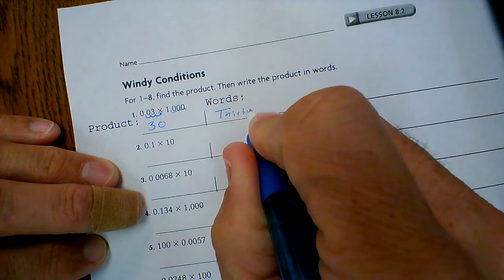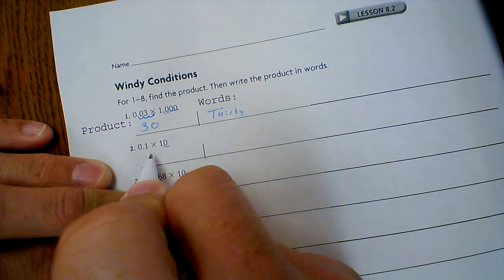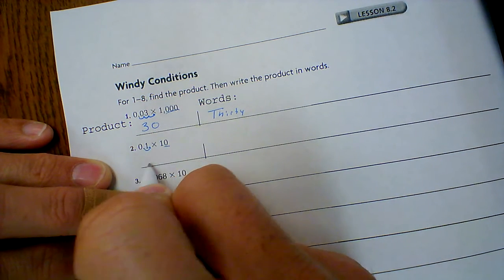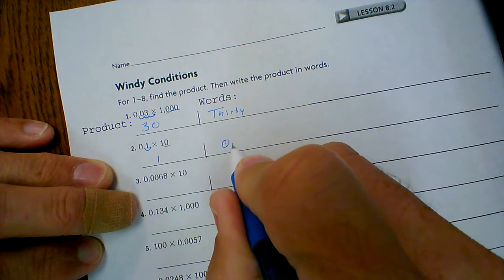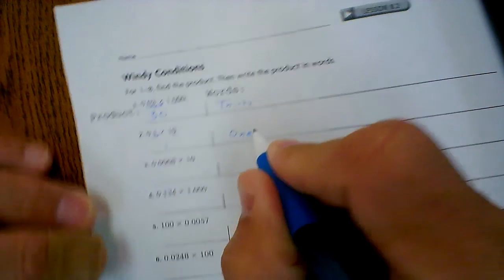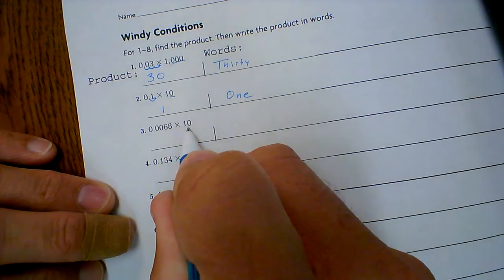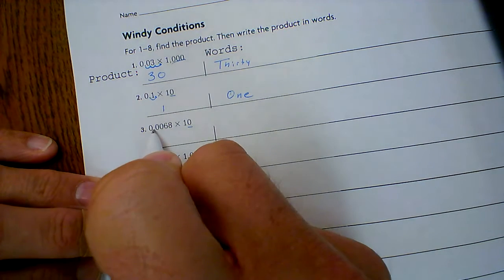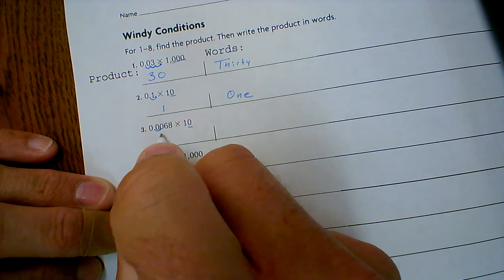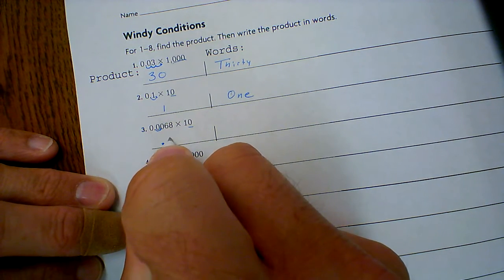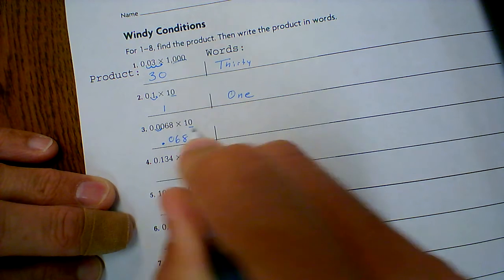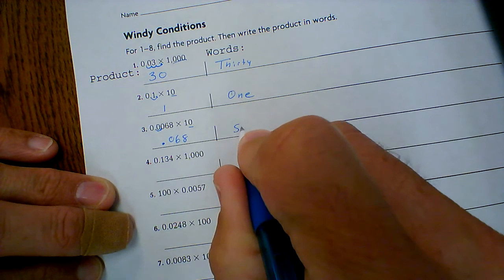One zero, so that means I move it once. My answer is one. I've got one zero, so that means I move it once, so decimal point zero six eight, sixty-eight.